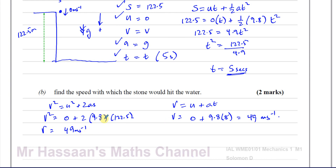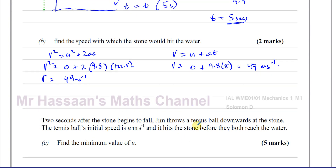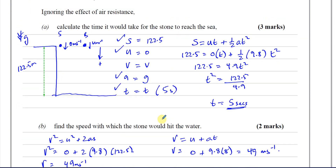For part C: two seconds after the stone begins to fall, Jim throws a tennis ball downwards at the stone. The tennis ball's initial speed is U meters per second and it hits the stone before they both reach the water. We need to find the minimum value of U.